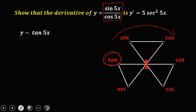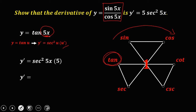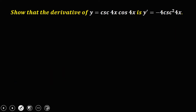Since the derivative of tangent is secant squared u times the derivative of u, y prime is equal to secant squared 5x — because u equals 5x — times the derivative of 5x, which is 5. So y prime is equal to 5 secant squared 5x.